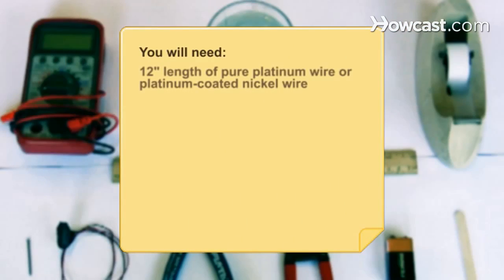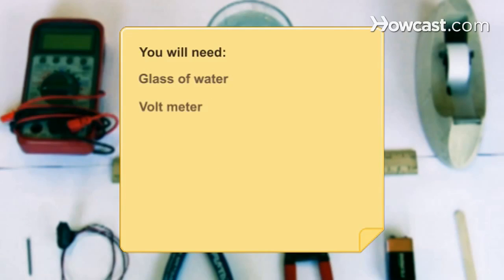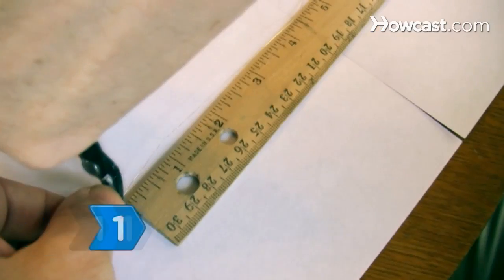You will need: 12-inch length of pure platinum wire or platinum-coated nickel wire, wire cutters, a nail, a 9-volt battery clip, clear tape, a popsicle stick, a glass of water, a voltmeter, and a 9-volt battery. Step 1.